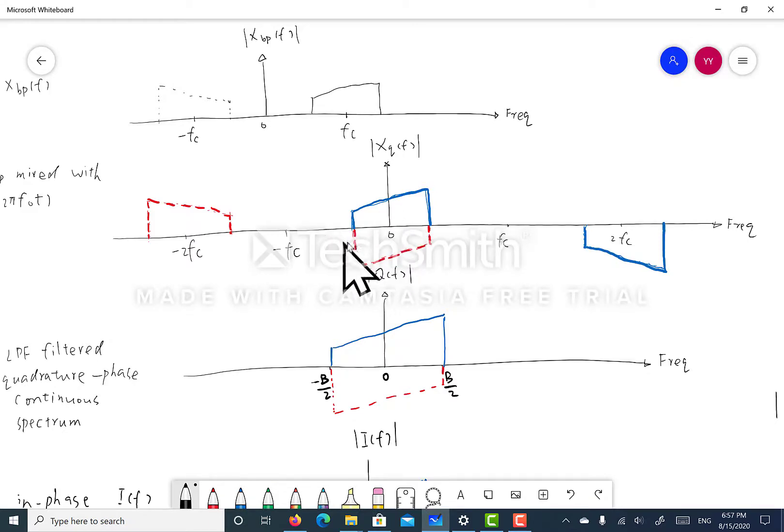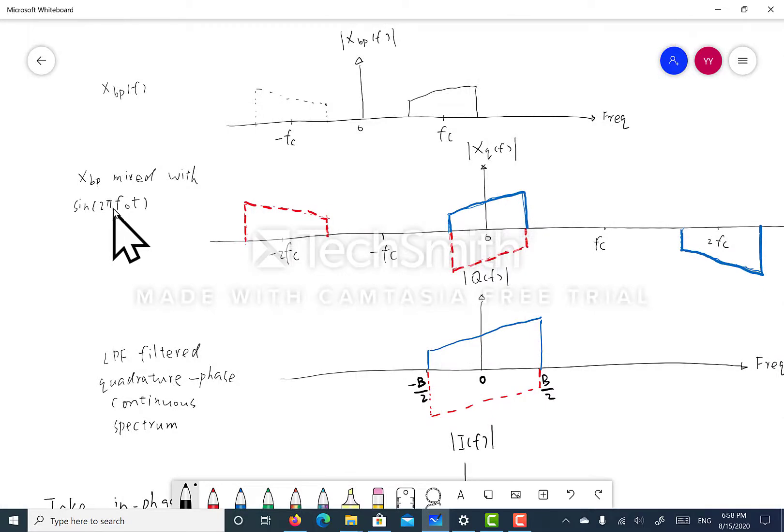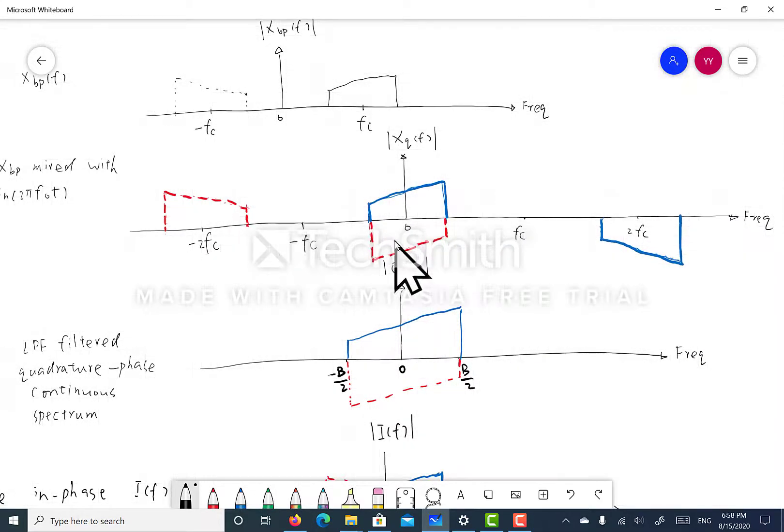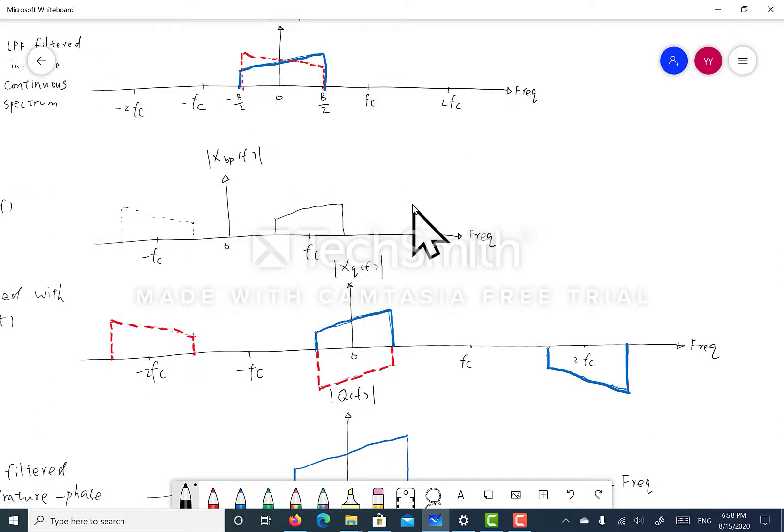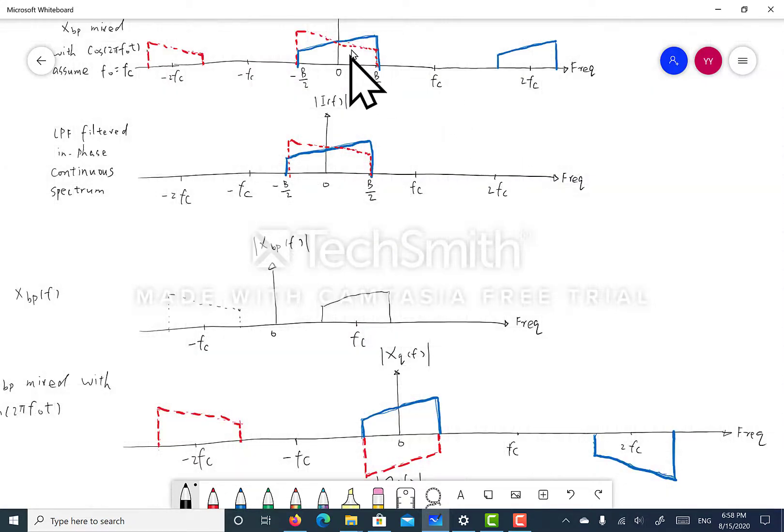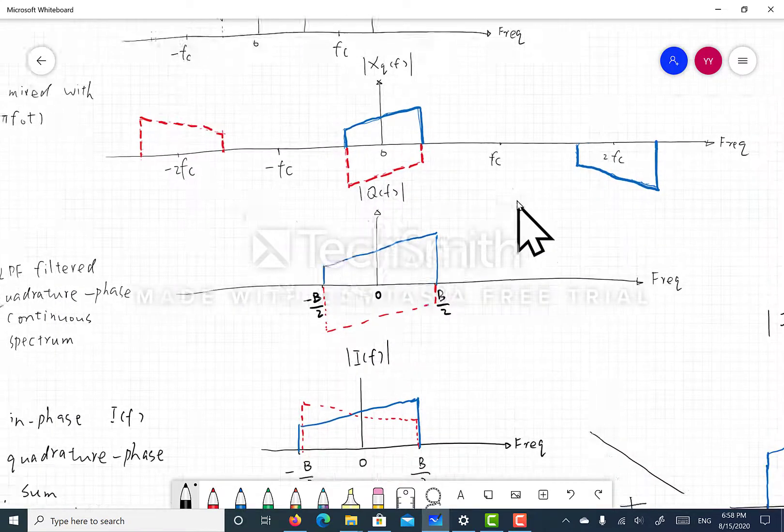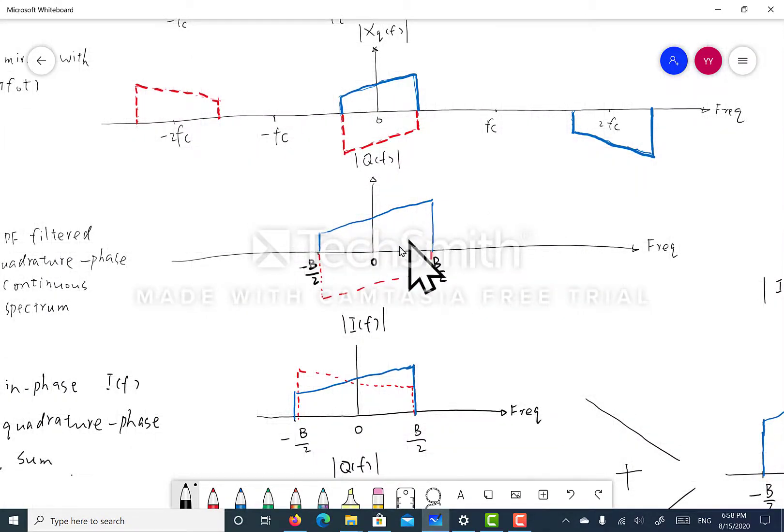But notice that here, because of the conjugate symmetry of the sine wave, the amplitude gets flipped. Unlike in the in-phase mixing scenario where they are merely symmetrical to each other. And after the low-pass filter, only the DC term remains.